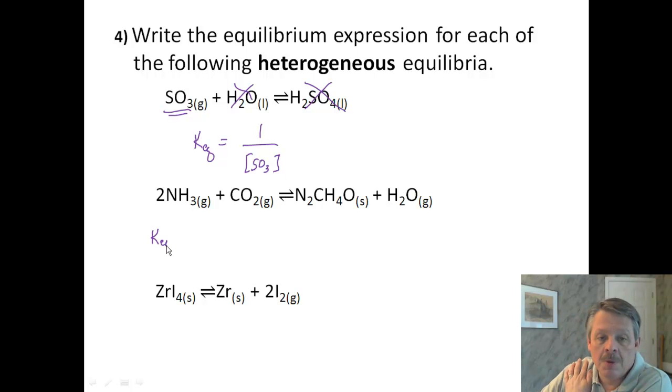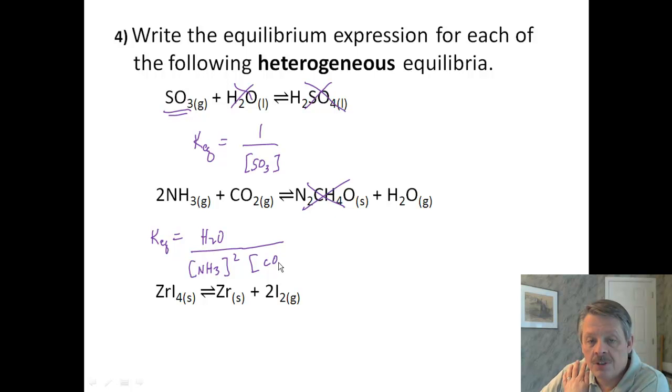Alright. My equilibrium constant for the next one. Let's see. We have this as a solid, so that disappears. So, we're left with our products. Let's see. And they're all gases. H2O products, divided by the concentration of NH3, and be careful, because that has to be squared, and the concentration of carbon dioxide gas. Alright. So, that's it for that one.